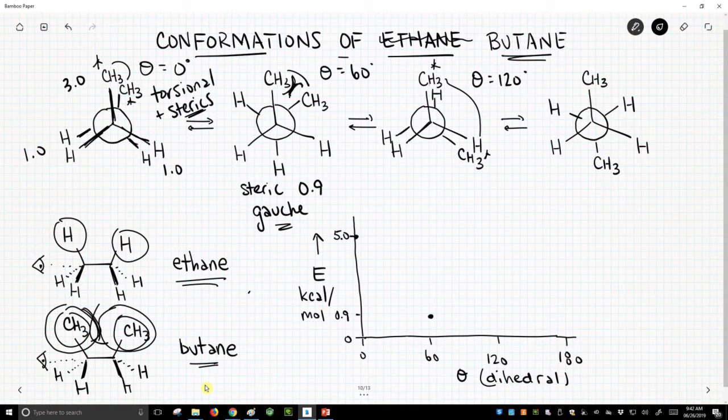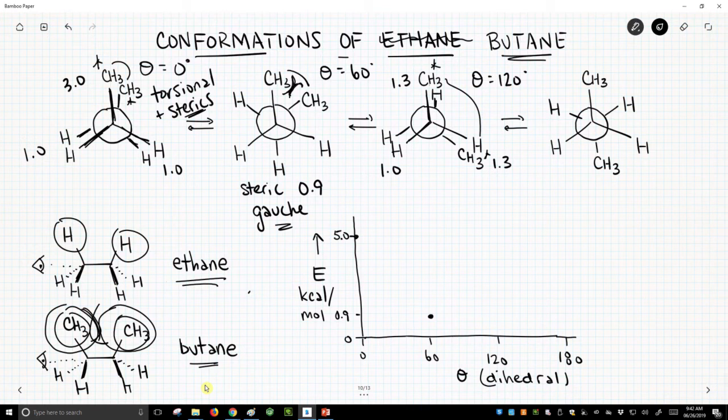We get torsional strain by eclipsing these two hydrogens. That's 1.0. And from propane, we know that eclipsing a hydrogen and a methyl, each of those is worth 1.3. So our total energy is 1.3 plus 1.3 plus 1.0. That gets us 3.6. And I'm going to estimate that's about there.